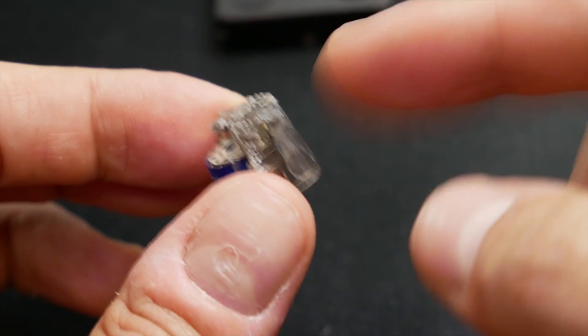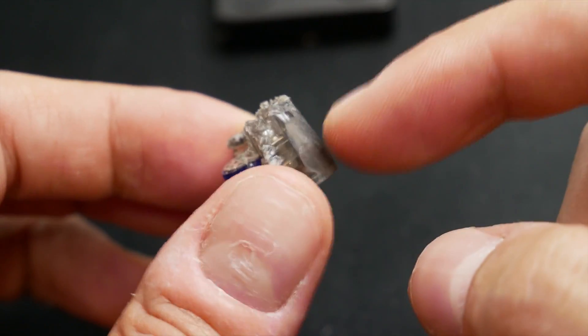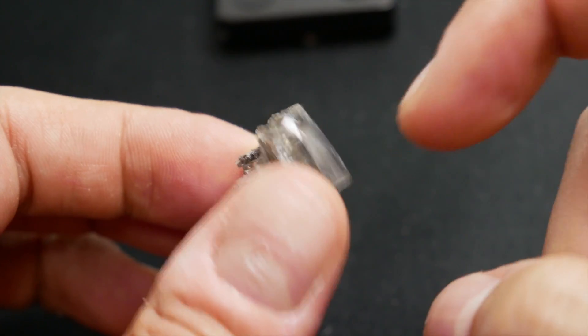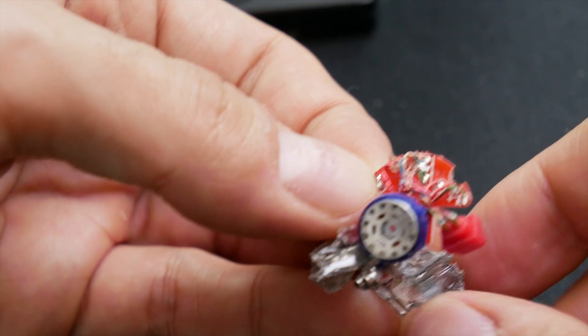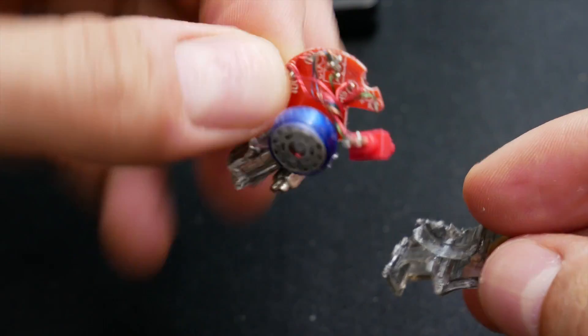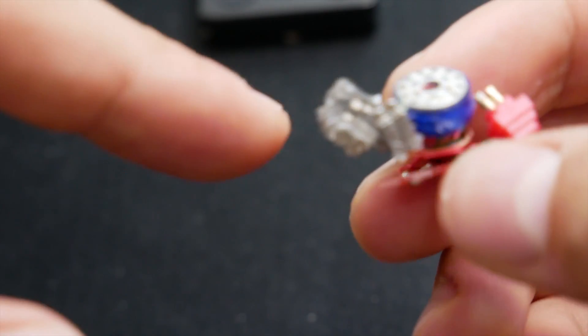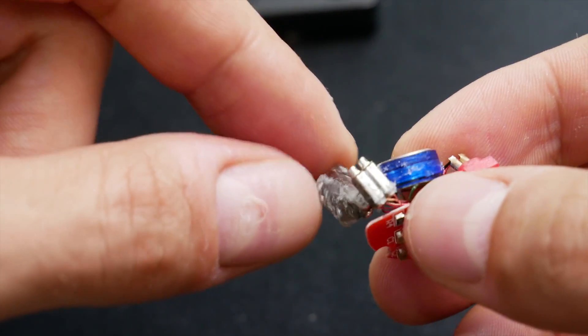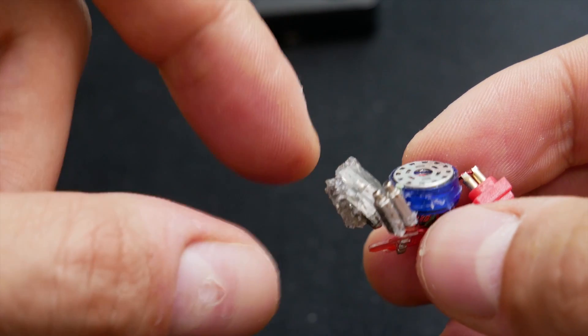I just now need to get to the balanced armature drivers which are still kind of sandwiched in there. So I'm going to start peeling away this acrylic right here. We're almost there. I just removed this large chunk. As you can see I've got two balanced armature drivers freed up.